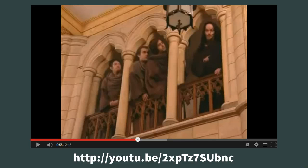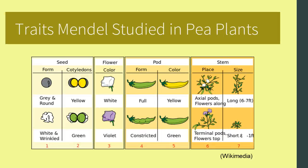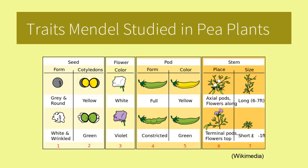Be sure to take a look at the lighthearted video about Mendel by visiting the link at the bottom of this slide. We will refer to some of the lyrics from that video during this screencast. Mendel crossed peas with a variety of traits, such as seed and pod form and color, flower color, and stem placement and size.